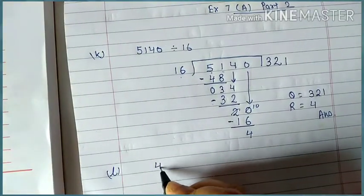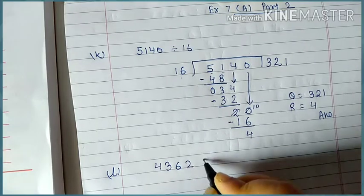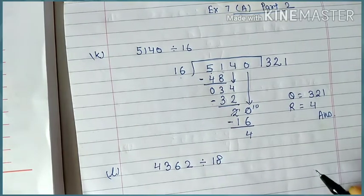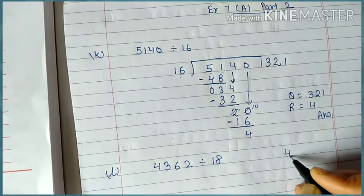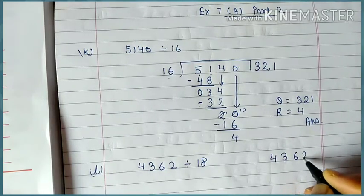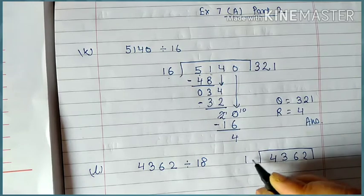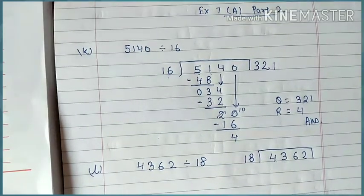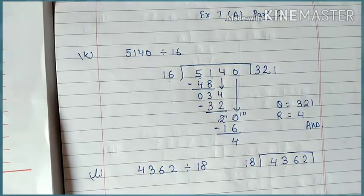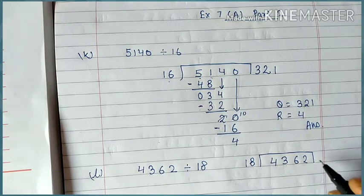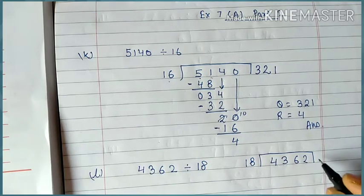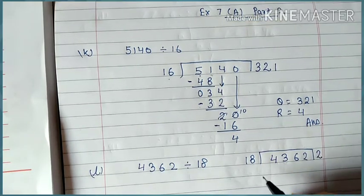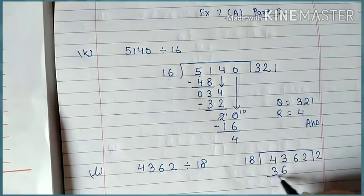What is the question? 4362 divided by 18. So what we are going to do? Let's remember 18 table. 18 times 1 is 18, 18 times 2 is 36, 18 times 3 is 54. This is 43. So it will be 3 times or 2 times? Just think. 2 times because it will be 36.